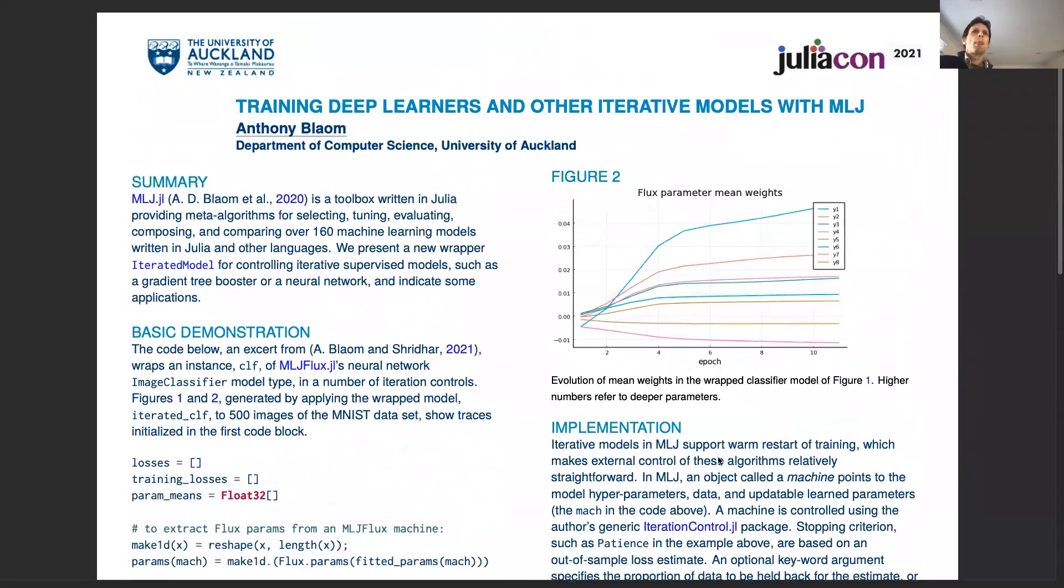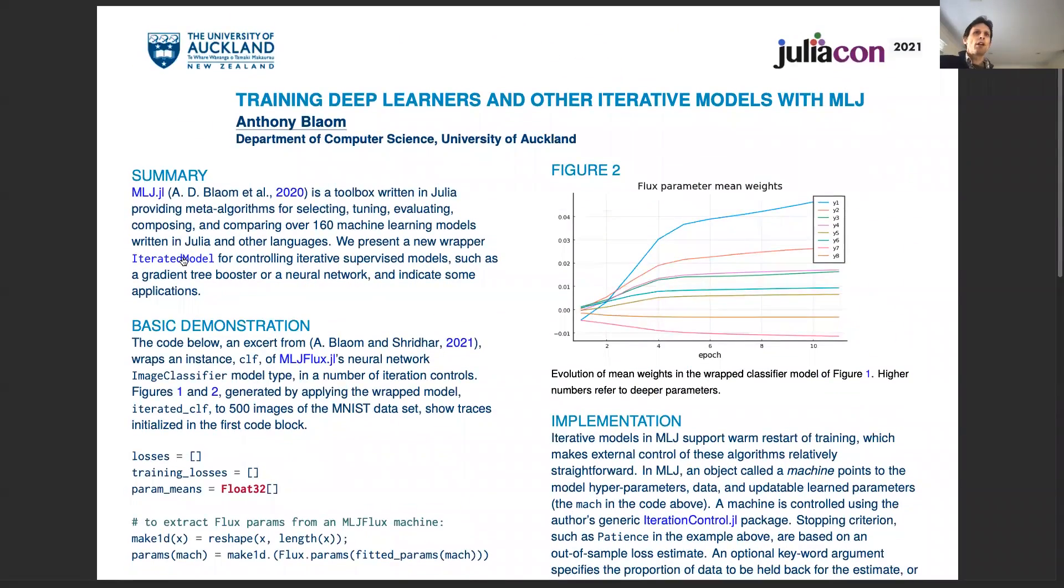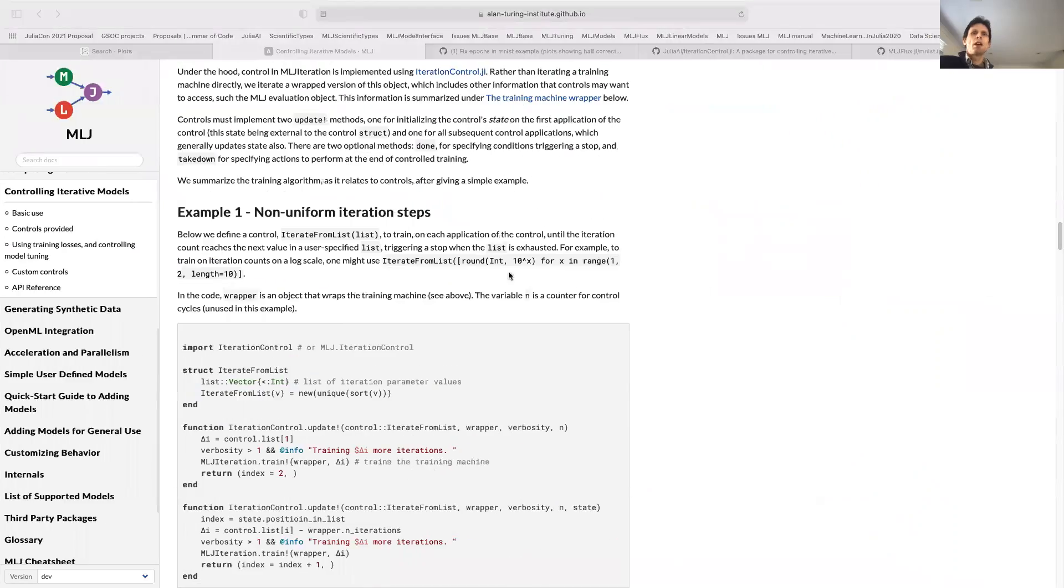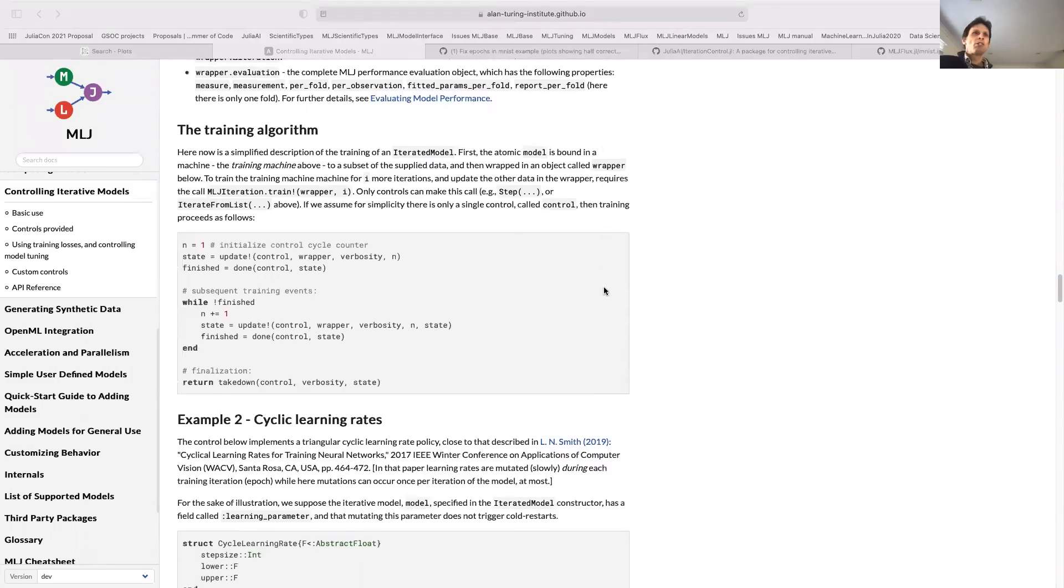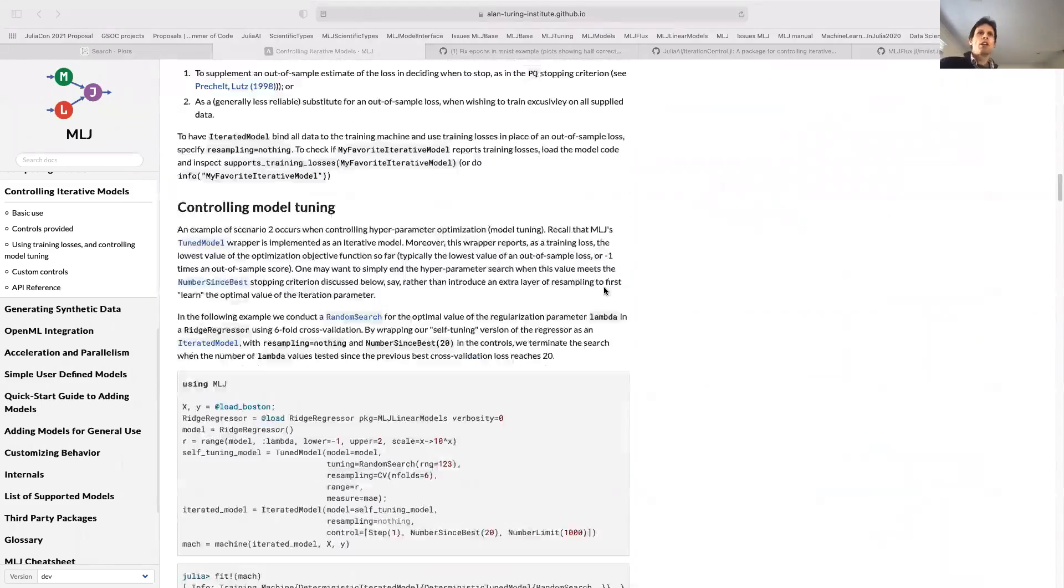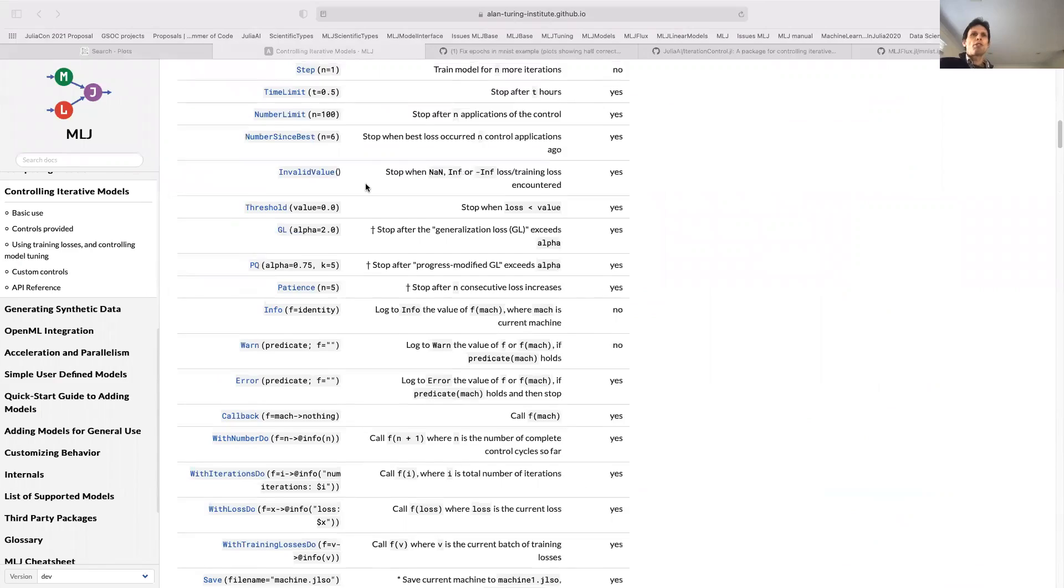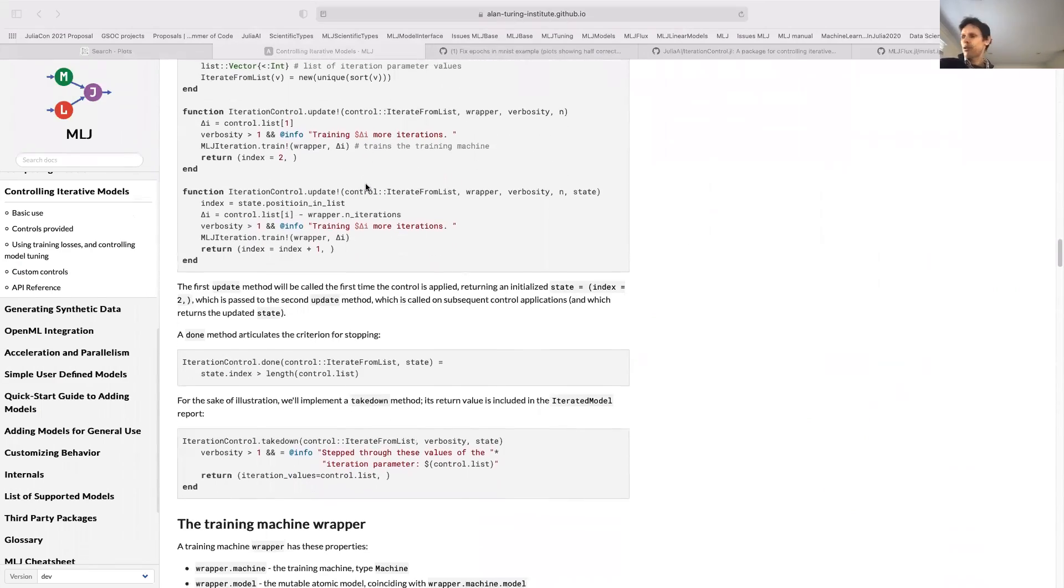Everything here is fully documented, so if you go to the MLJ documentation, you can see a list of all the controls that are available and how to define your own controls.